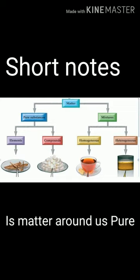For example, milk is commonly a mixture of water, fat, and protein, so that milk is not pure. When a scientist says that something is pure, it means that all the constituent particles of that substance are the same in their chemical nature. A pure substance consists of a single type of particles.